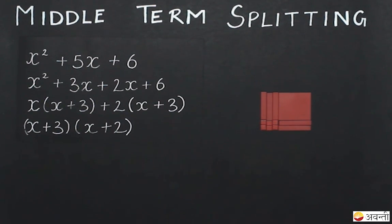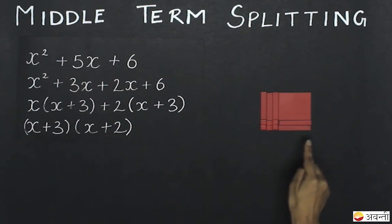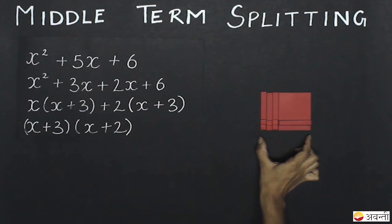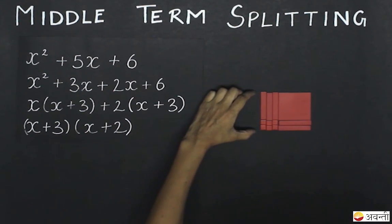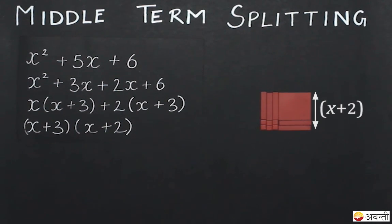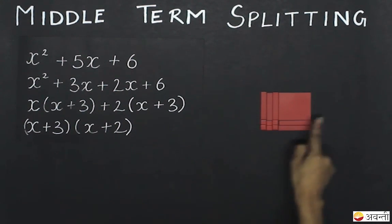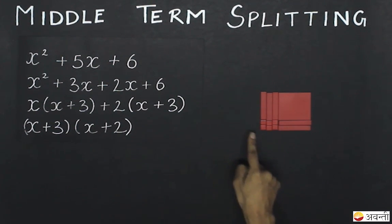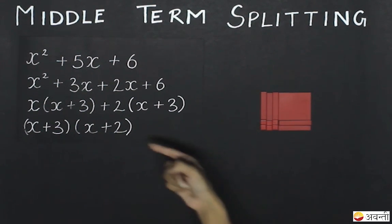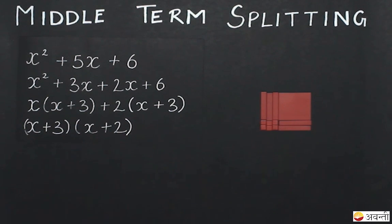What do I get? I get a rectangle the length of which is x plus 3 and the breadth of which is x plus 2. The area of this rectangle will be x plus 3 into x plus 2, which is our expression.